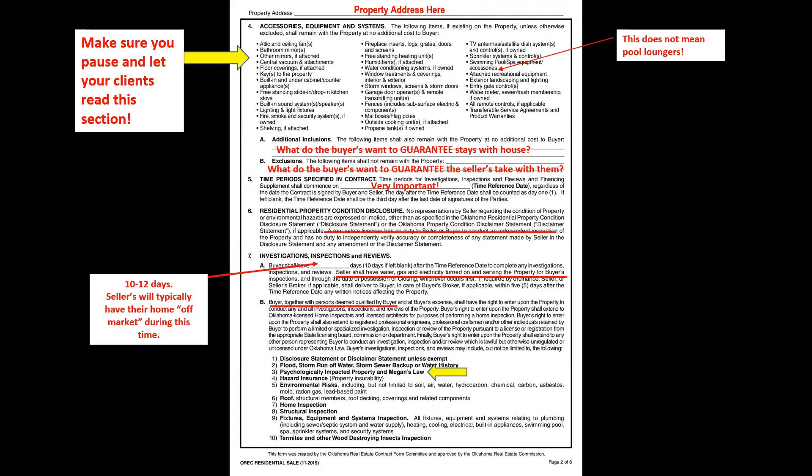One important inspection I strongly recommend is having the roof inspected. If there is any concern, call the insurance company to send someone out. If they can't get out during your inspection period, call an independent roofing company for their opinion, because inability to get insurance may not relieve the buyer of their obligation to proceed with the purchase later.